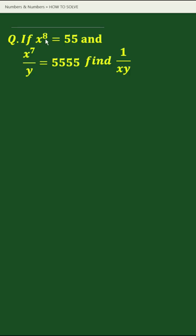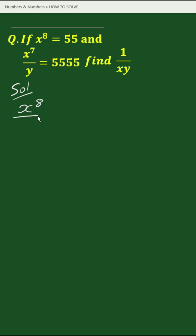If x to the power 8 equals 55 and x to the power 7 by y equals 5555, find 1 by xy. We can write x to the power 7 by y equals 5555 as x to the power 8 by xy equals 5555.